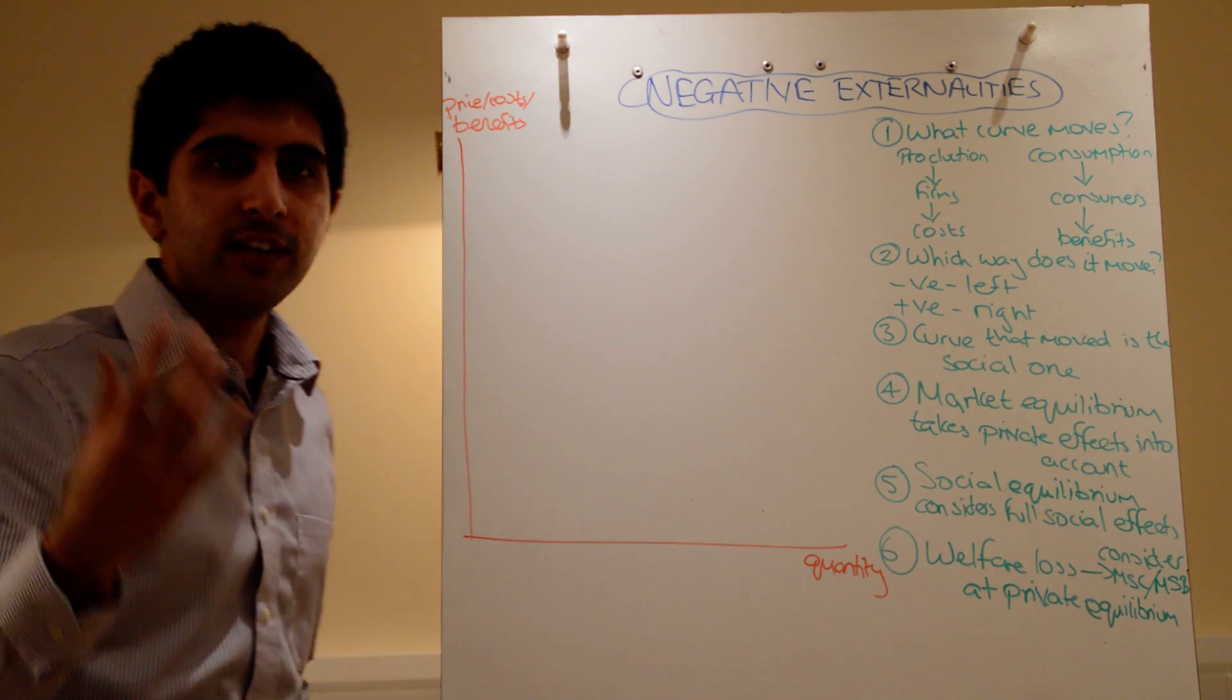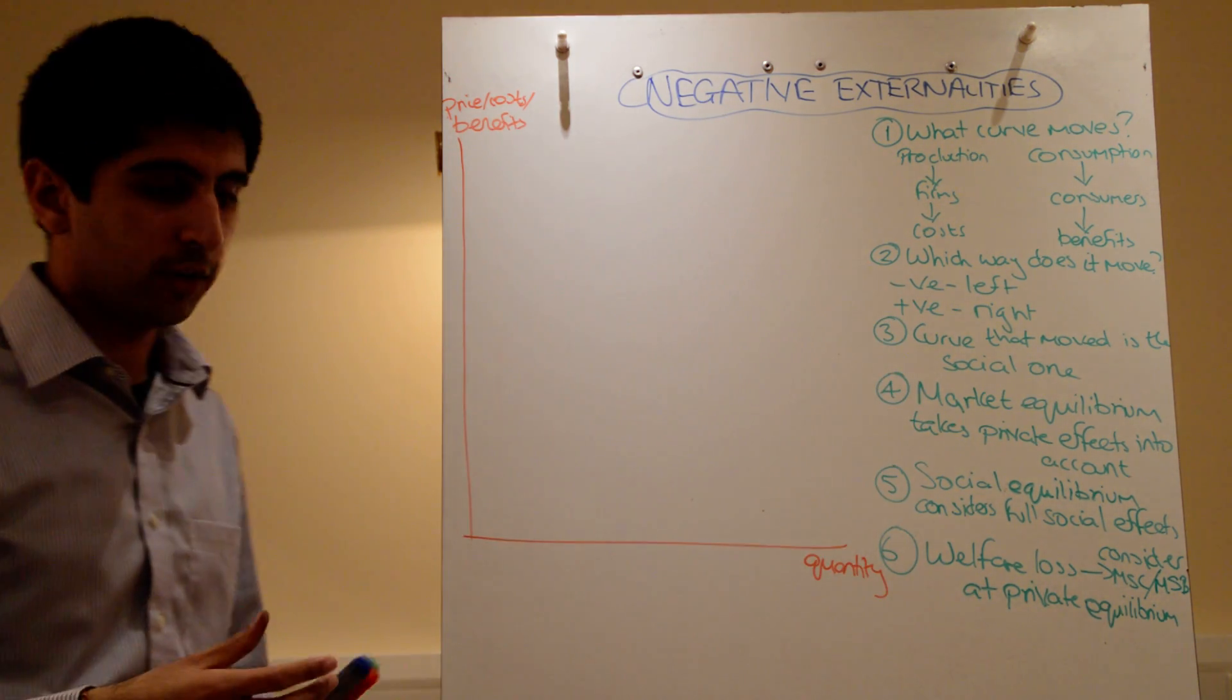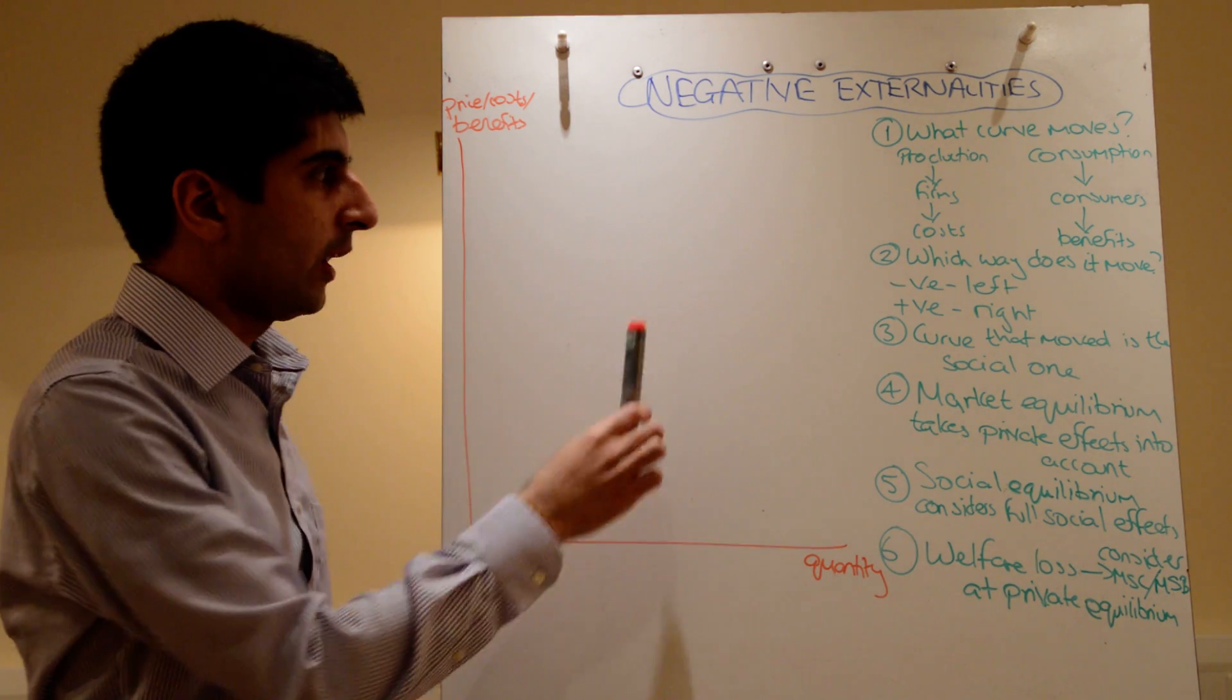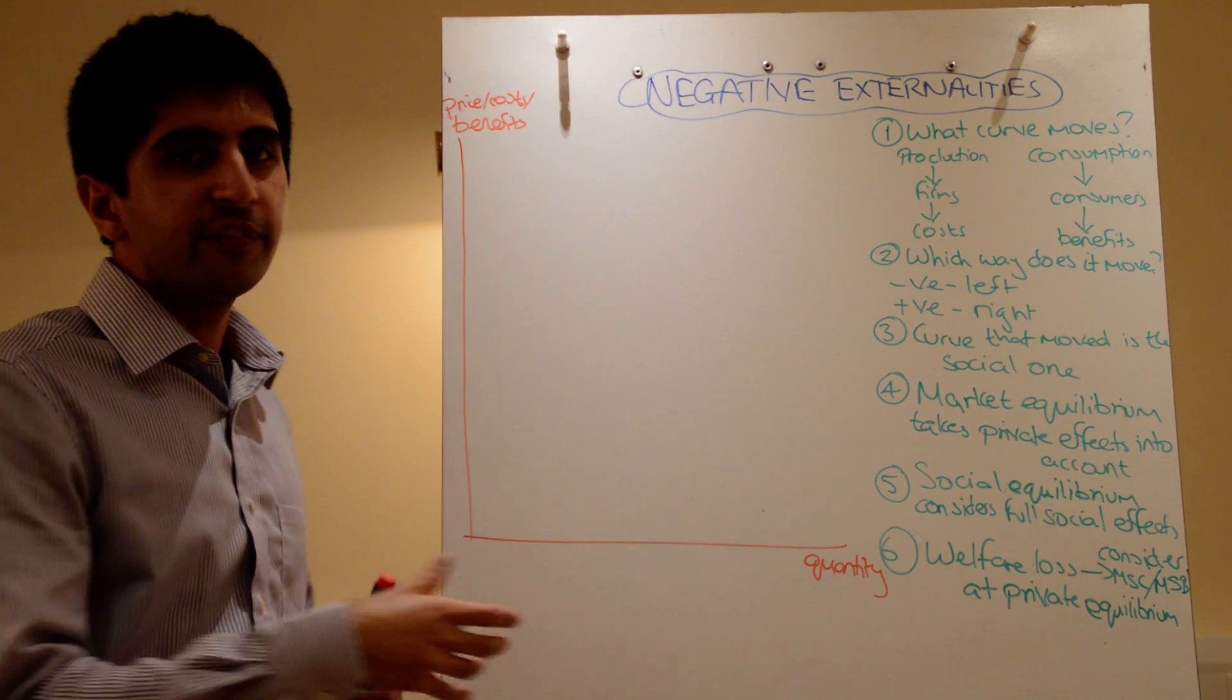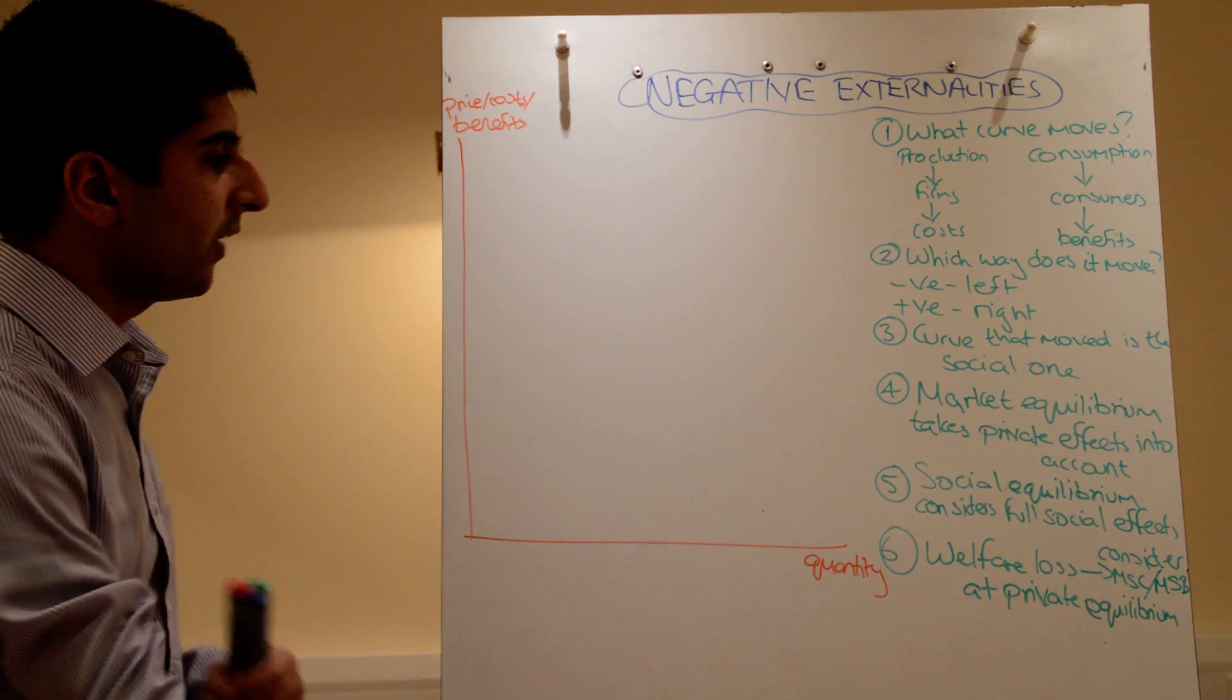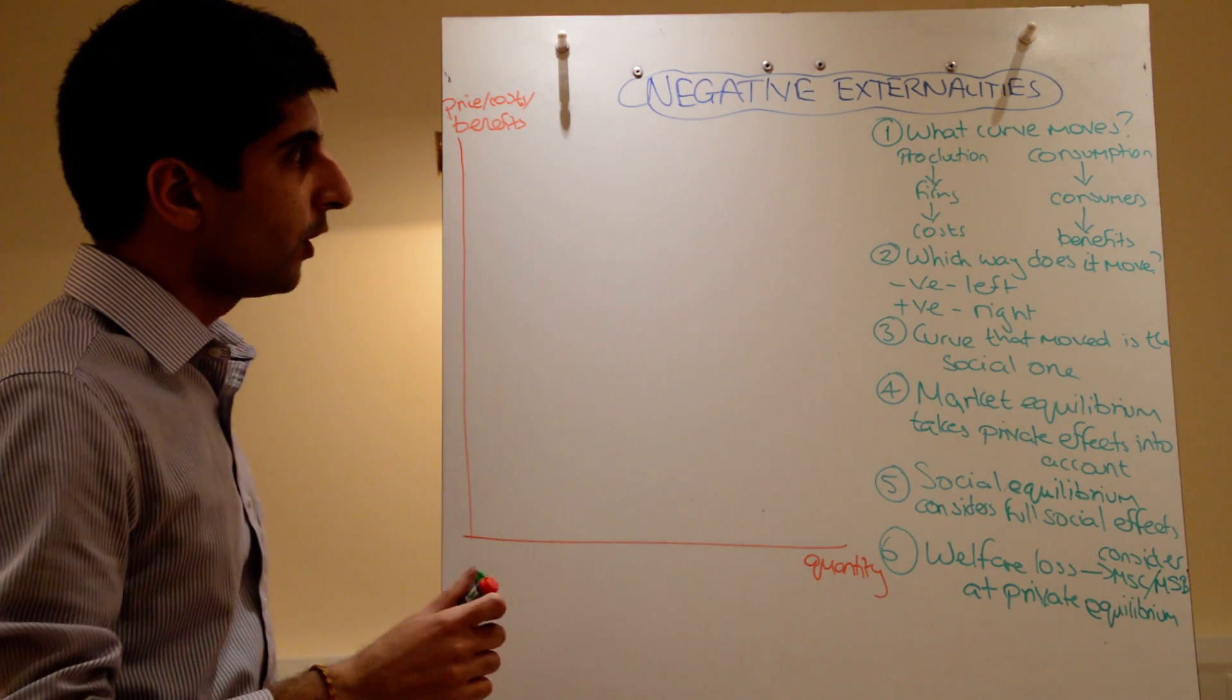So negative externalities, we need to consider how they cause market failure and why their existence leads to a misallocation of resources. We can show the market failure on a diagram.